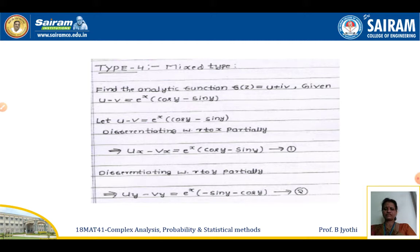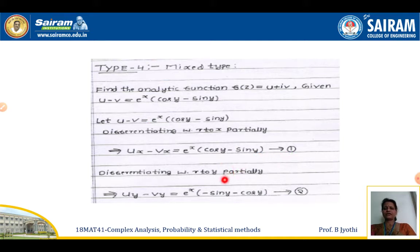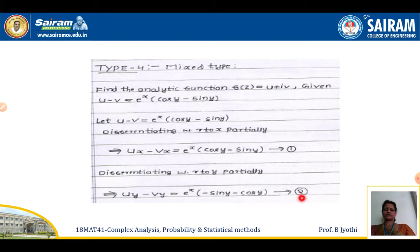They have given u minus v as e^x into (cos y minus sin y). Differentiating with respect to x partially, we get u_x minus v_x equals e^x into (cos y minus sin y) — call this equation 1. Again, differentiating with respect to y, u_y minus v_y equals e^x into (minus sin y minus cos y) — call this equation 2.